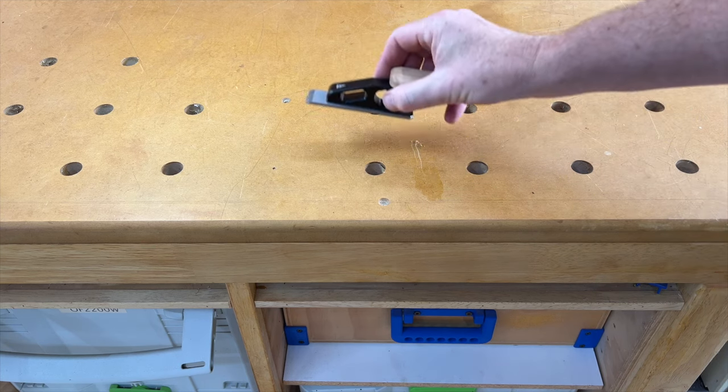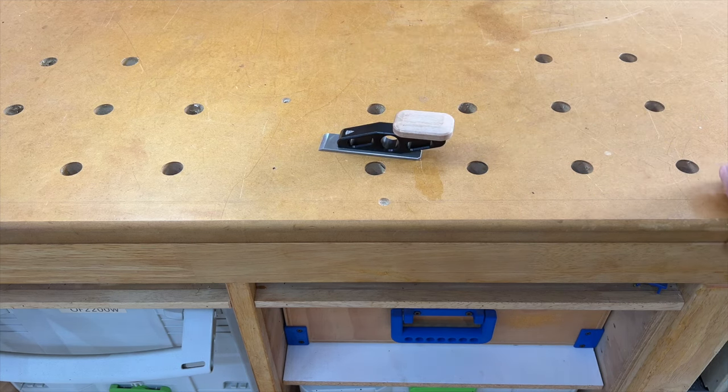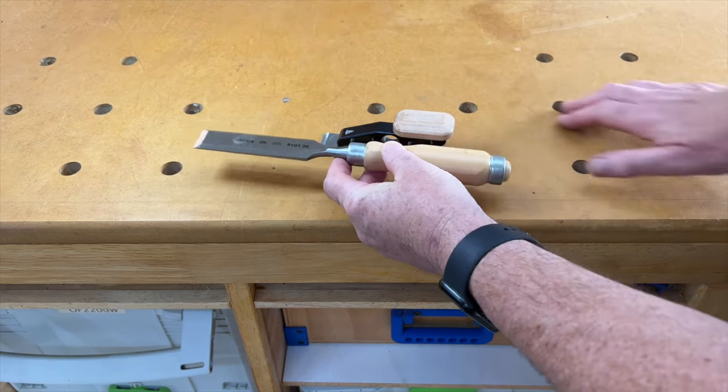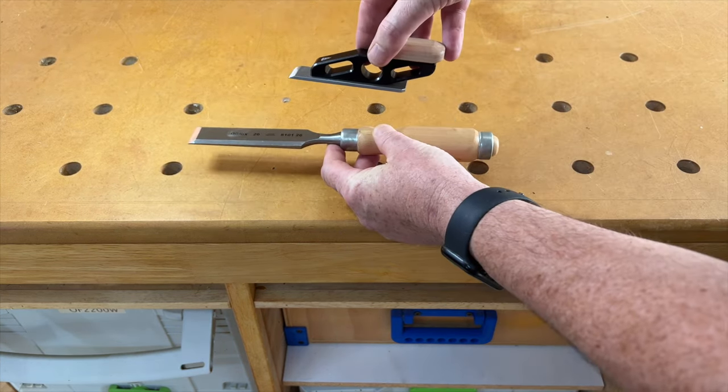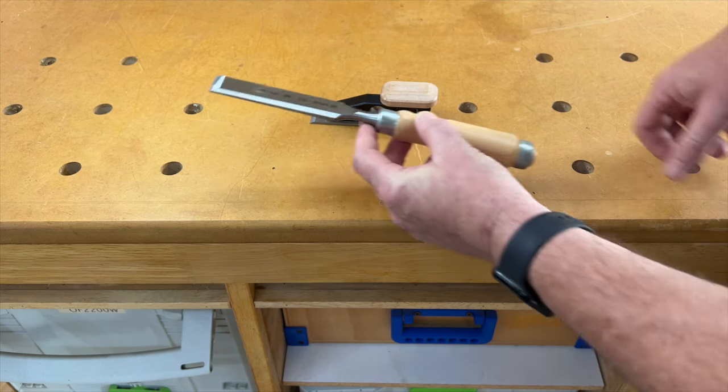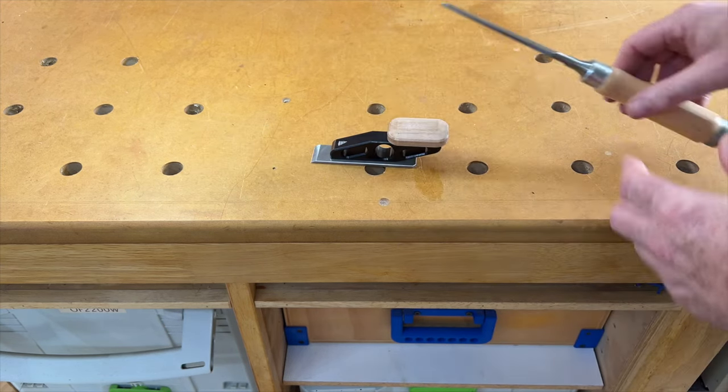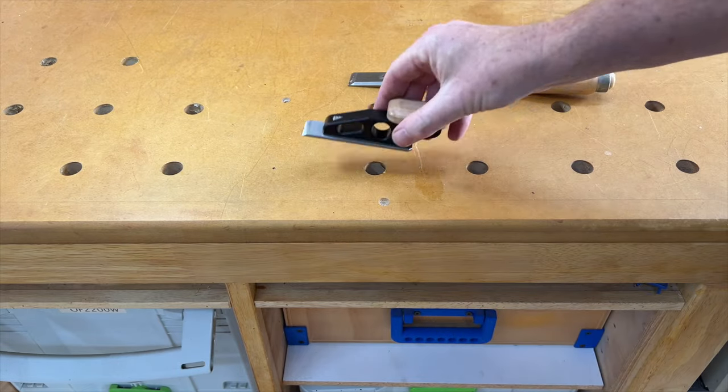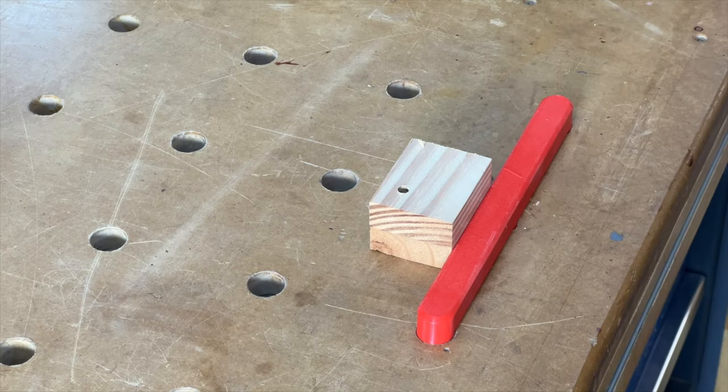So that's one of the places this shines. And of course the other one is space. Look at the length of a chisel compared to the length of a chisel plane. So if you want to get something into the bottom of a drawer, into the corner there where the two pieces of wood meet, the chisel plane's going to fit.